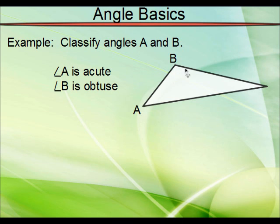Likewise, angle B is definitely more than 90 degrees, so we would say that is obtuse. Note the symbols here. Angle A, angle B. We're naming it based on the vertex.